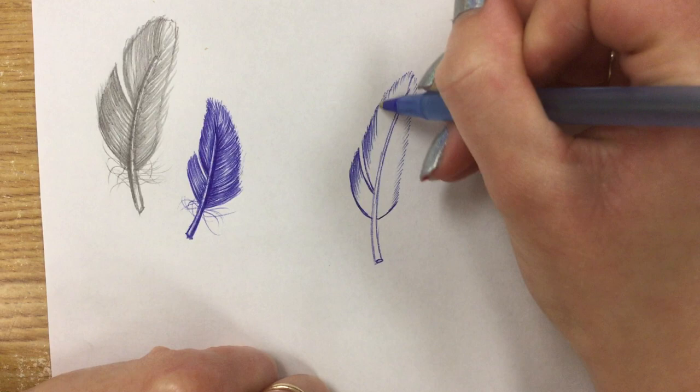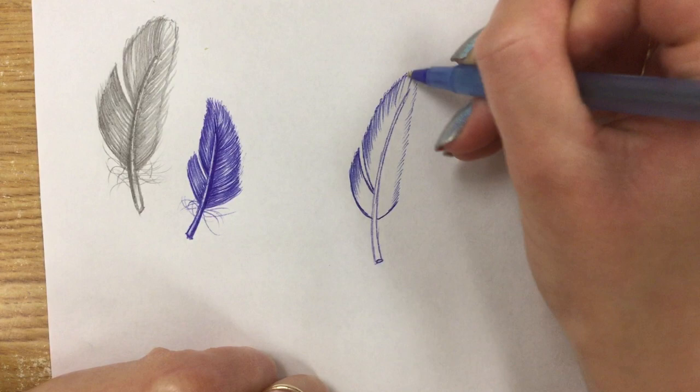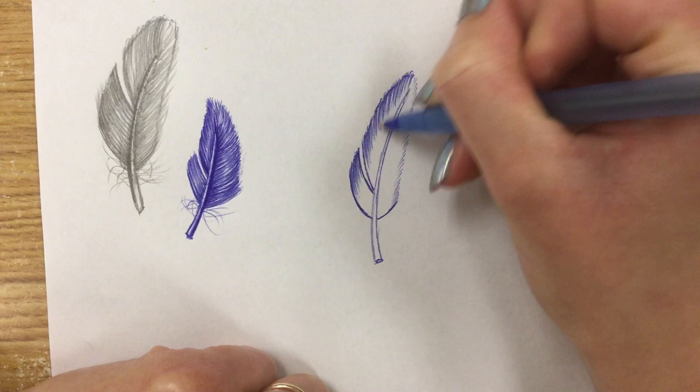So I still get these wispy delicate lines and kind of darken the outside. It'll make the feather look more curved.